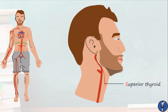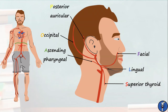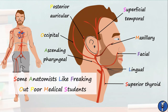The first branch is the superior thyroid artery, followed by the ascending pharyngeal. Next we have the lingual, which supplies the tongue, and the facial, which supplies the lower part of the face. The occipital artery supplies the occiput, and the posterior auricular supplies the back of the ear. Finally, the maxillary artery passes deep to the maxilla to produce numerous important branches, and the superficial temporal supplies the temple. The mnemonic to remember this is: Some Anatomists Like Freaking Out Poor Medical Students — very true, and it should help when it comes to revision time.